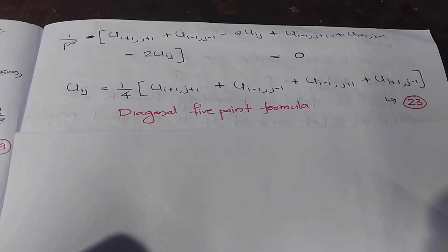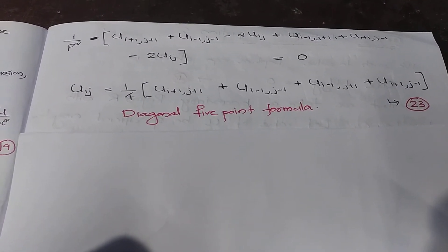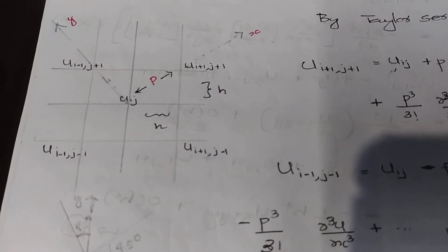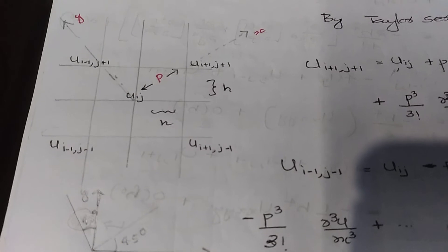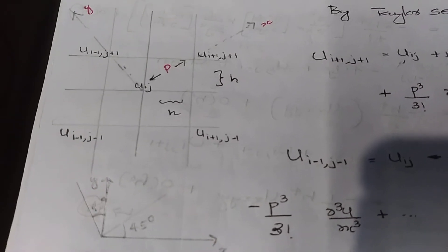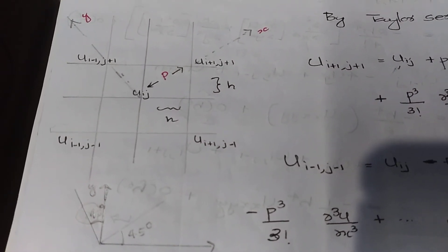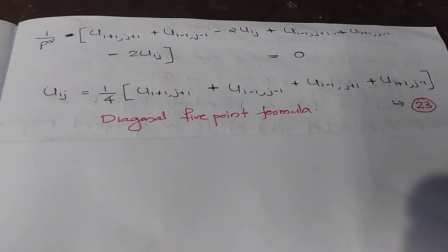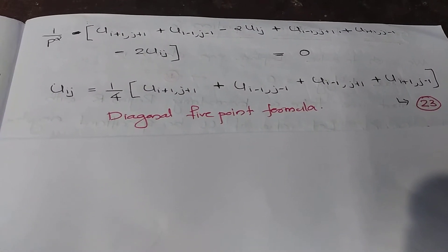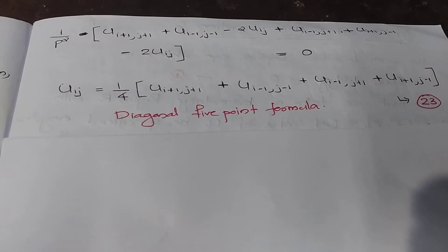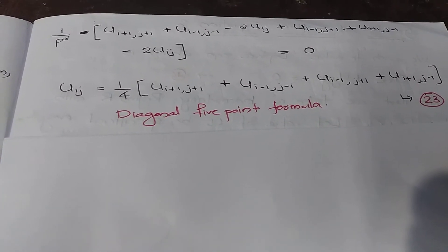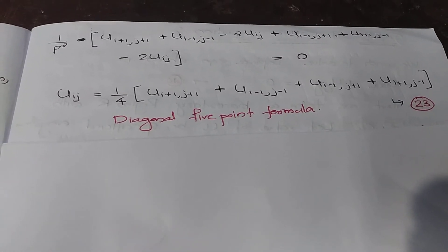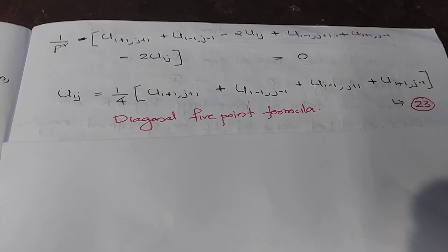In the diagonal five point formula, u(i,j) is computed using its four diagonal neighbors: u(i-1,j+1), u(i+1,j+1), u(i+1,j-1), and u(i-1,j-1). If these four diagonal values are known, we can find u(i,j). The error term of the diagonal five point formula also needs to be considered.